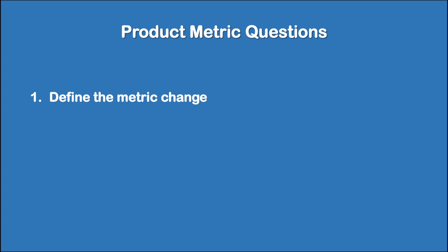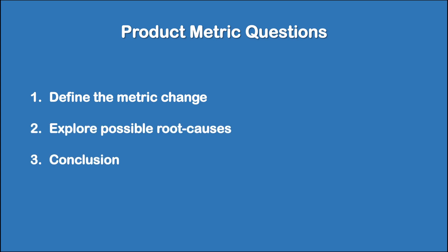There are many different reasons for a product metric to go up or down, and an interviewer will want to see you take a bulletproof approach to find the root cause of the issue. A common mistake candidates make when answering metric questions is to provide an unstructured answer. So let's walk through a step-by-step approach you can use to avoid that pitfall, specifically for metric change questions. We use a three-step approach to help you give a clear and thorough answer.